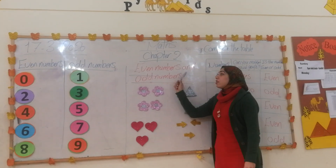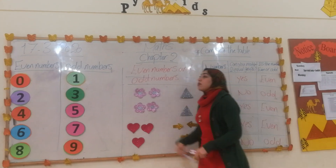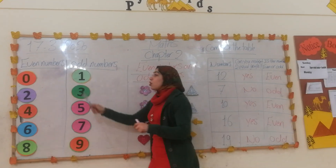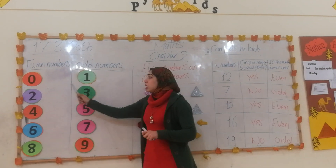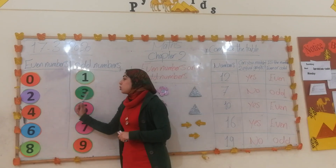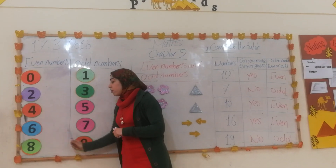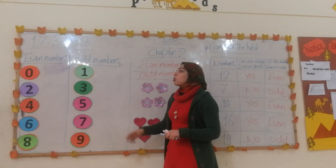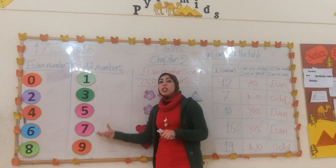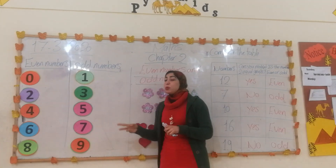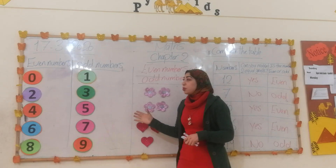Our lesson today is about even and odd numbers. We have these numbers from 0 up to 9: 0, 1, 2, 3, 4, 5, 6, 7, 8, 9. We want to divide these numbers into two groups: even numbers and odd numbers.